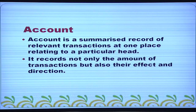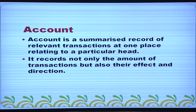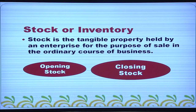An account is a summarised record of relevant transactions at one place relating to a particular head — sales account, purchases account, machinery account, and land account are examples. It records not only the amount of transactions but also their effect and direction. Stock is the tangible property held by an enterprise for the purpose of sale in the ordinary course of business. There are two types of stock: opening stock and closing stock.